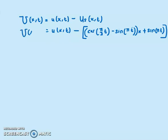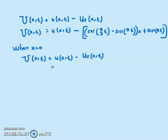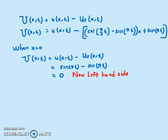We apply the conditions again to find U(x,t). When x = 0, U(0,t) = u(0,t) − u_s(0,t) = sin(πt) − sin(πt) = 0. So the new left-hand side boundary condition is zero.